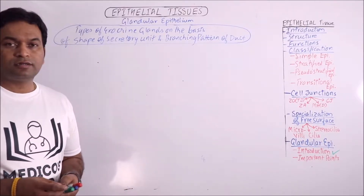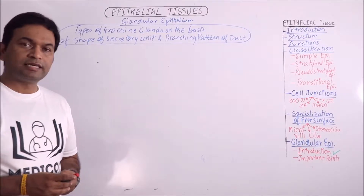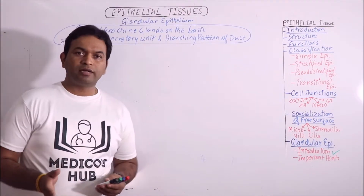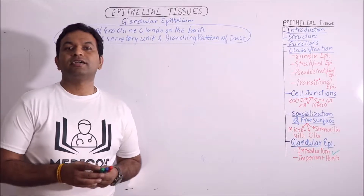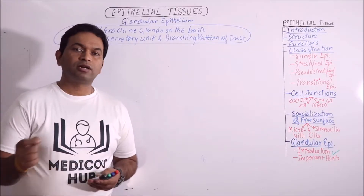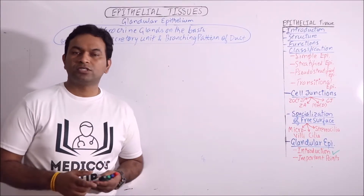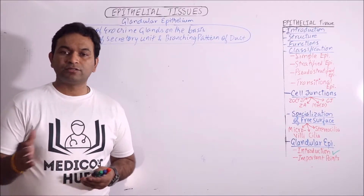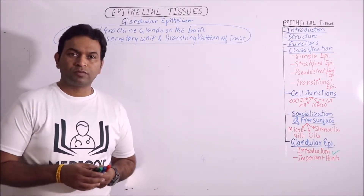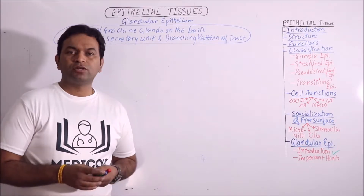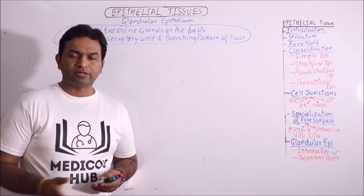A gland is an organ which has specialized secretory cells. These secretory cells may be one to many. If there is only a single secretory cell, then it is said to be a unicellular gland, like goblet cells which secrete mucus, and the Paneth cells which secrete the lysozyme enzyme. The rest of the glands, which are the majority, are said to be multicellular glands.